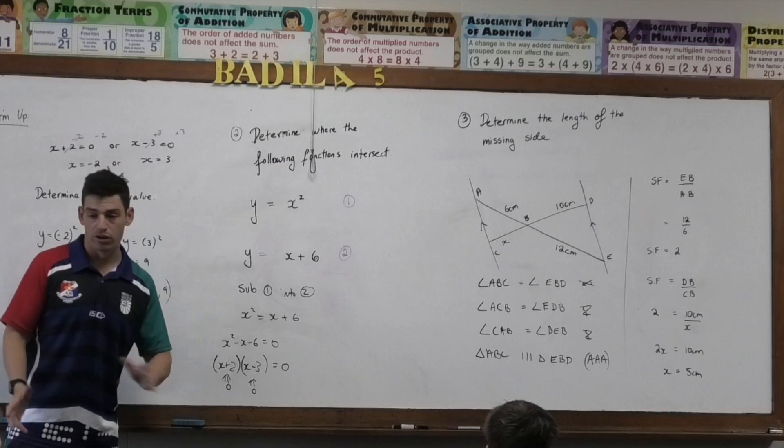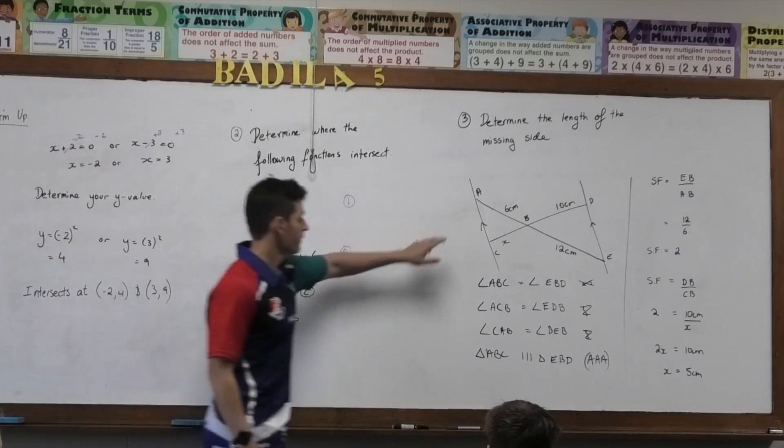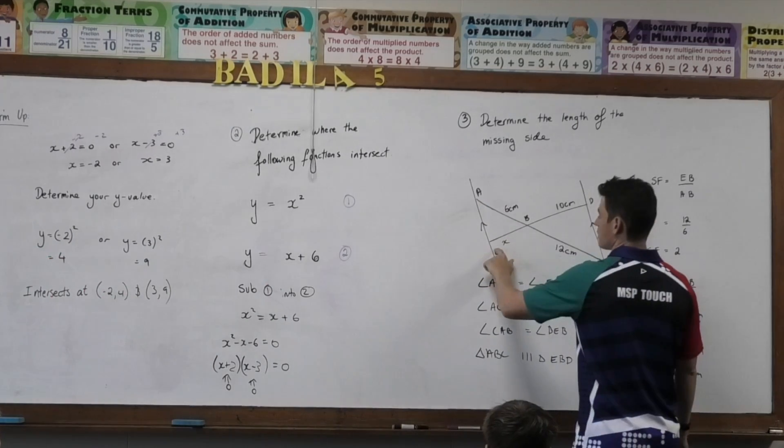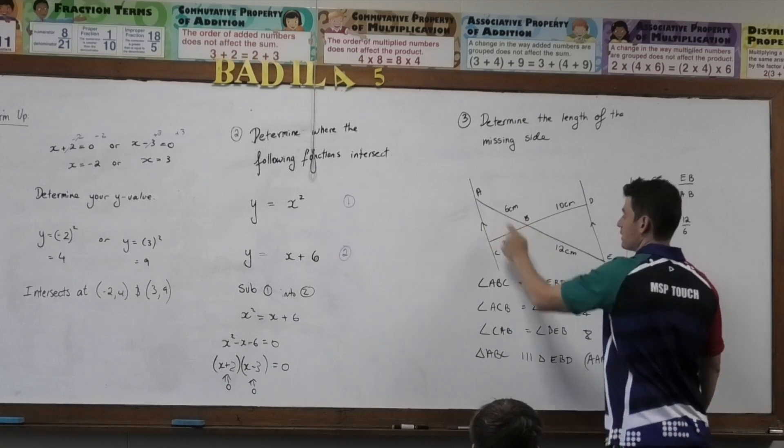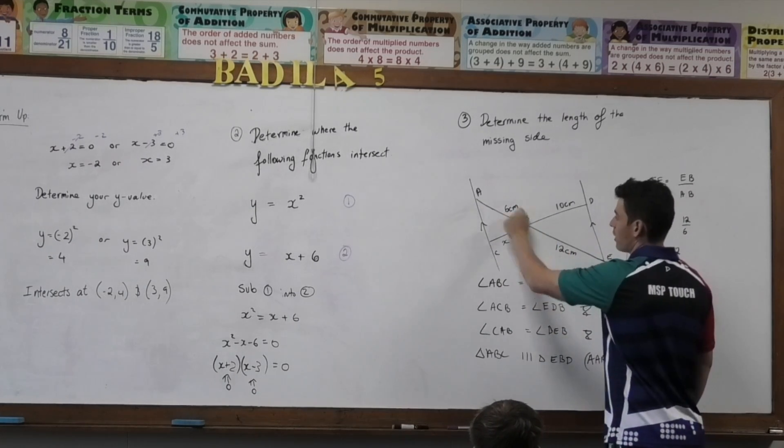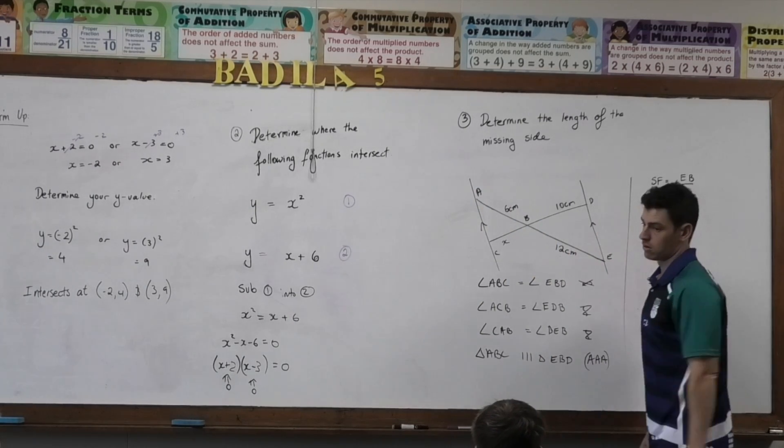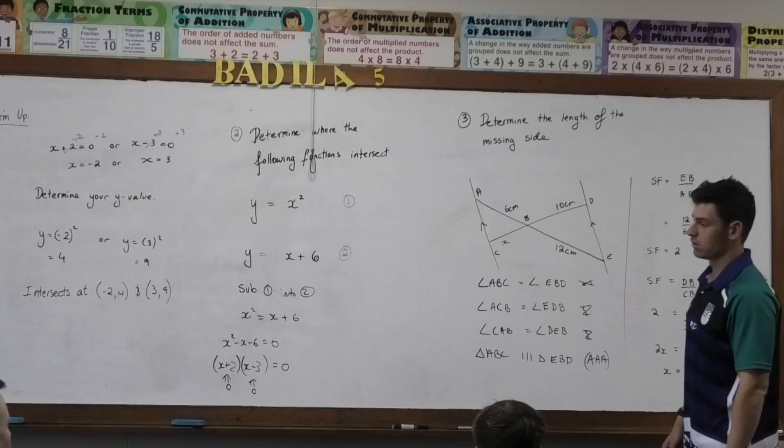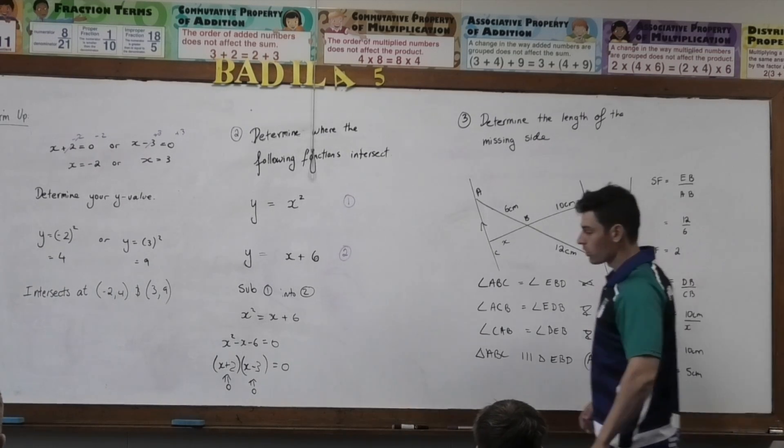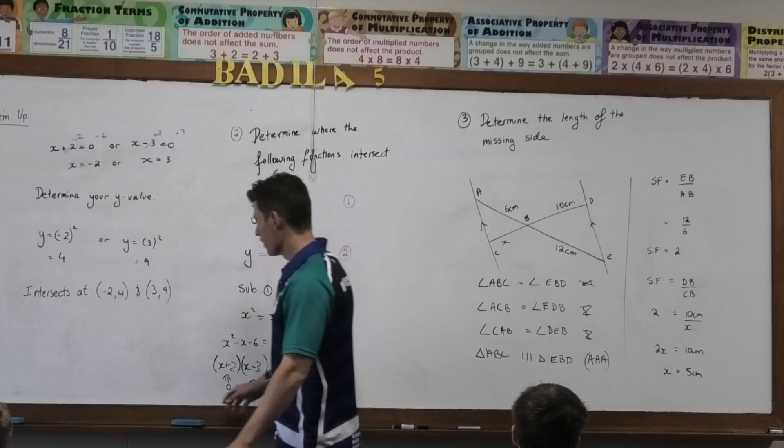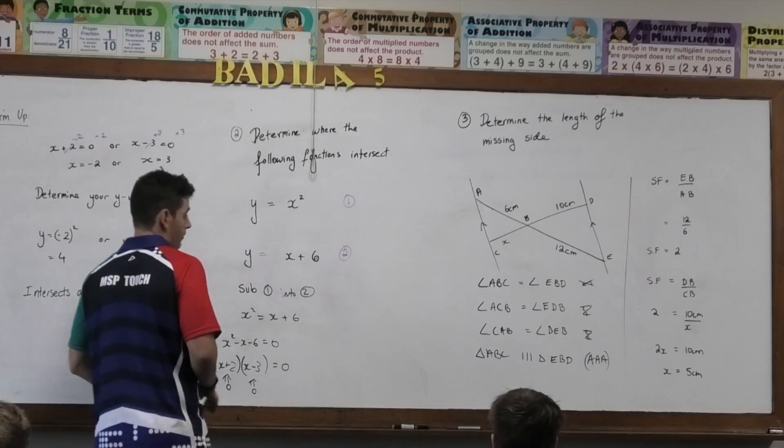But the order doesn't matter. Because I could start, what I'm saying is triangle ABC, it could be triangle BAC, it could be triangle CBA, it doesn't matter which. Still a triangle. Alright, we'll look at question 3 and then we'll finish up there.